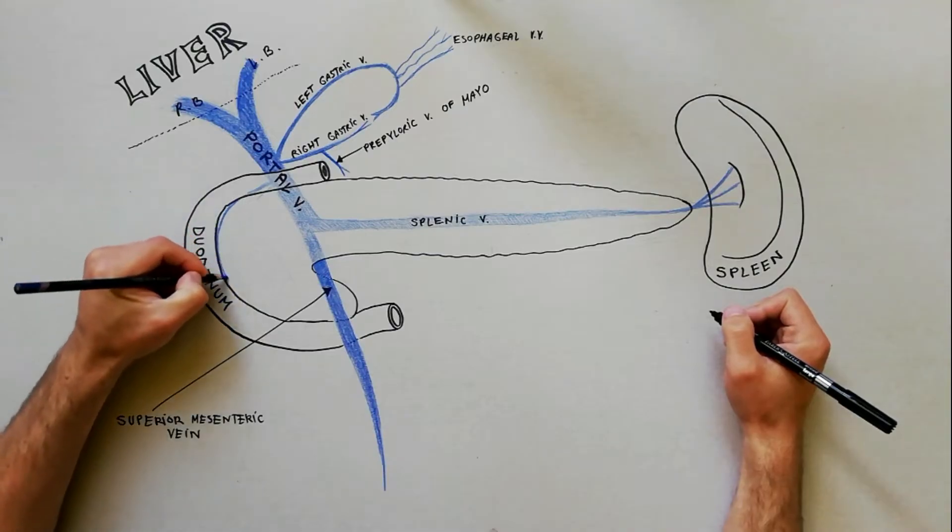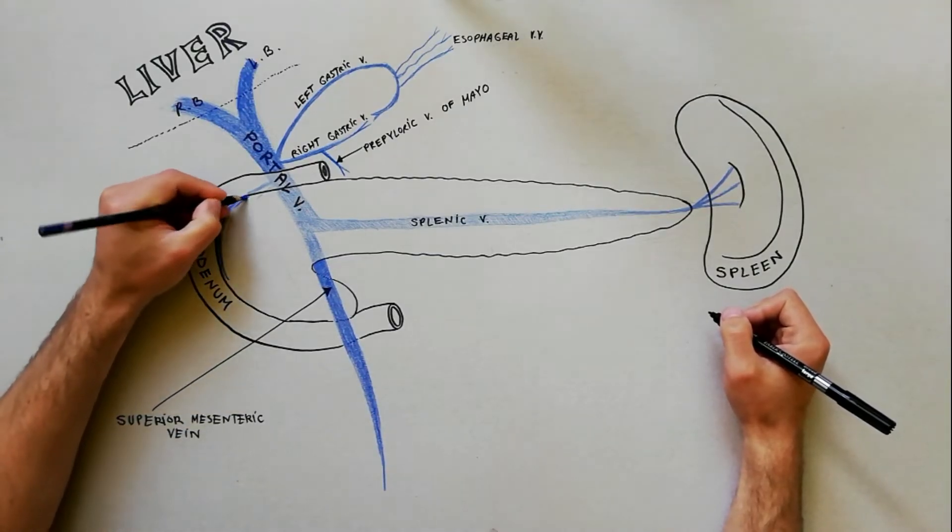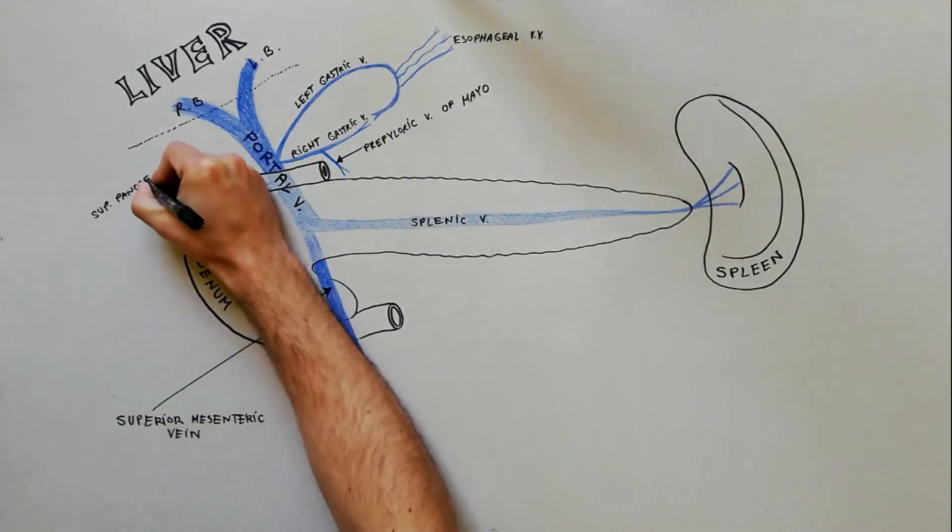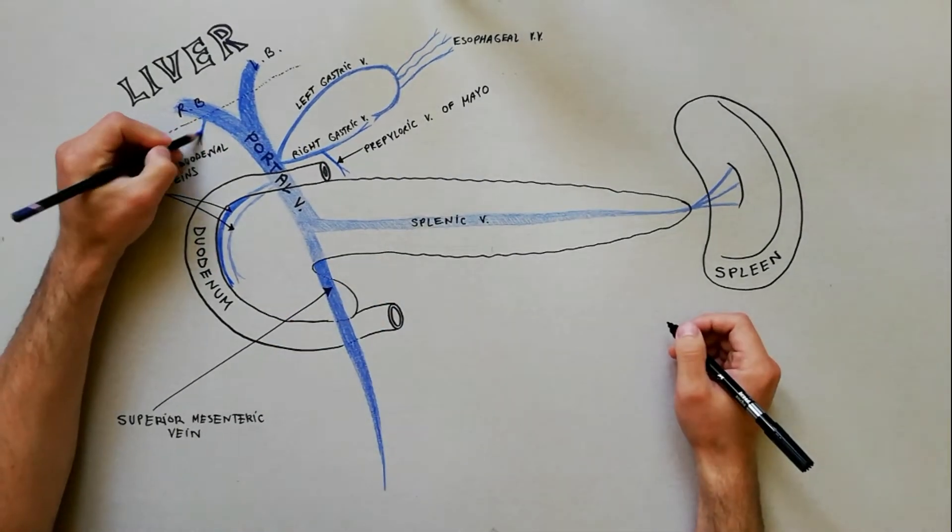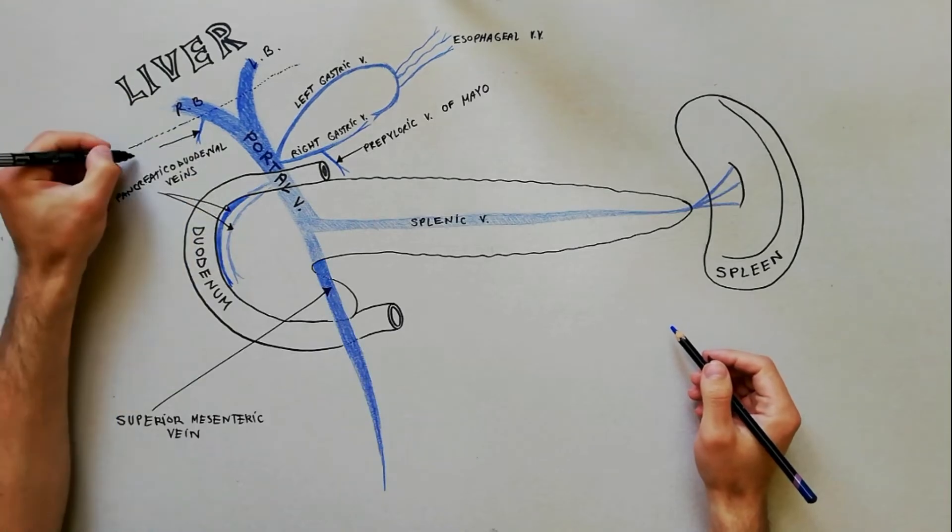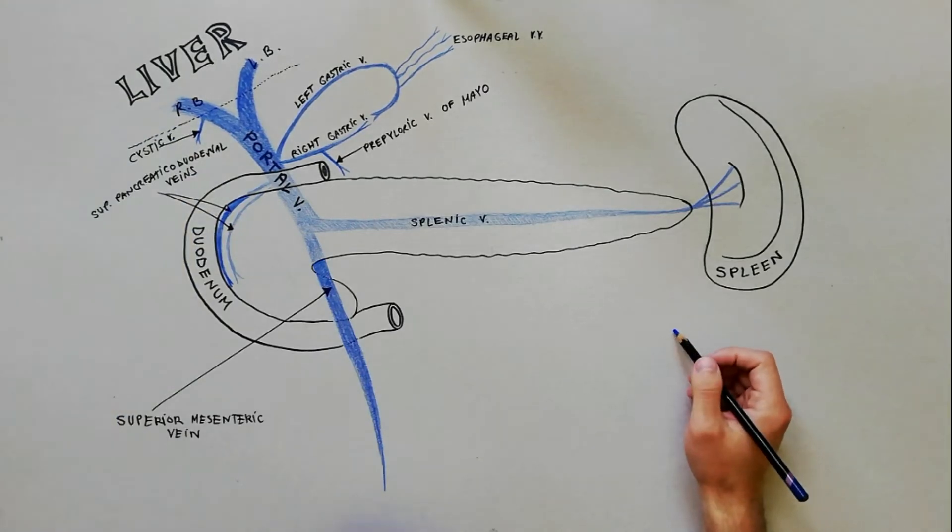The superior pancreaticoduodenal veins drain in the portal vein just behind the first part of duodenum. The cystic vein usually is a tributary of the right branch of the portal vein.